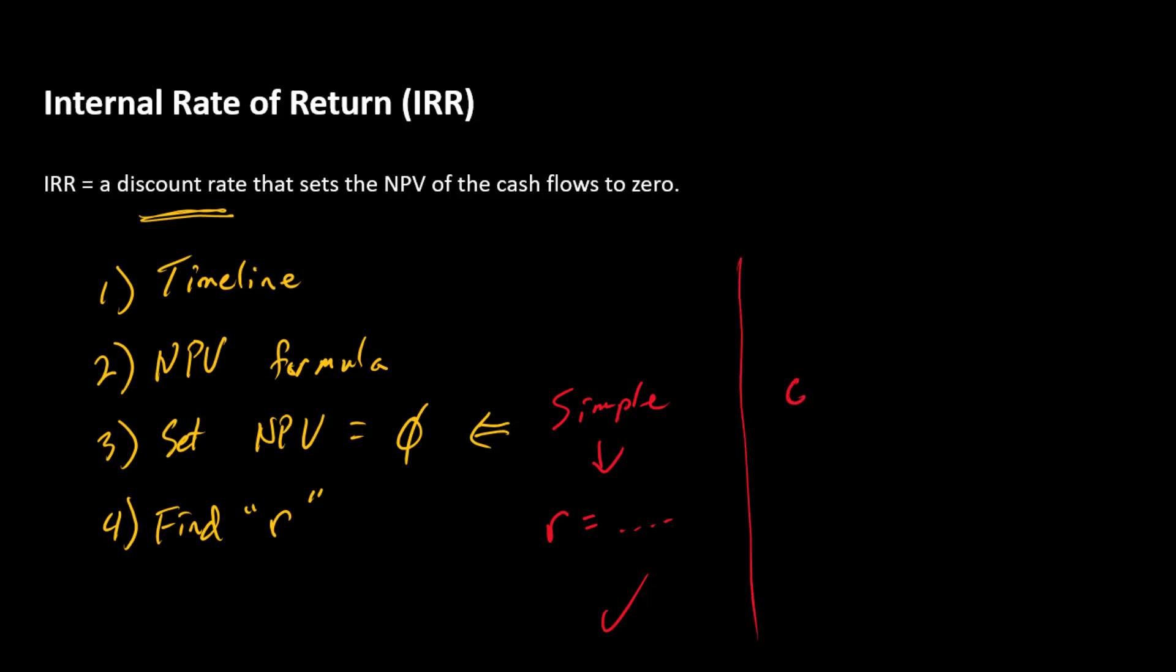In other cases, this formula is going to be much more complex. And so if it's complex, we've got no closed form solution. And so what do we do? We have to solve for R by trial and error.